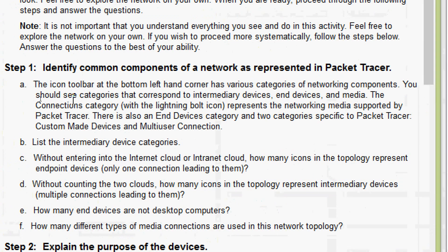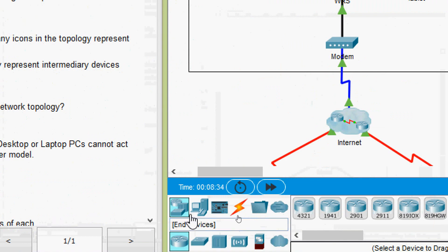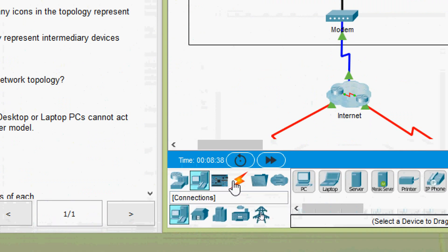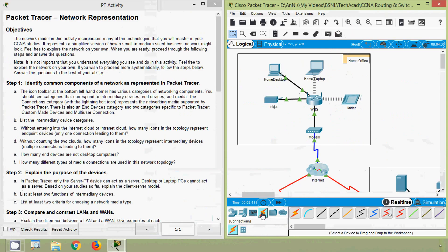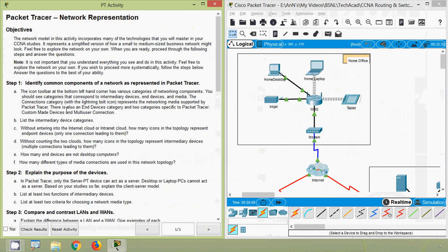Coming to part A, the icon toolbar at the bottom left-hand corner has various categories of networking components. You should see categories that correspond to intermediary devices, end devices, and media. In our Packet Tracer, we can see the toolbar with intermediary devices, devices, and connections. The connections category with the lightning bolt icon represents the networking media supported by Packet Tracer.